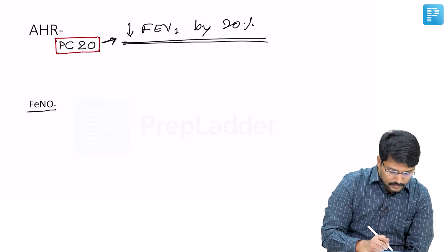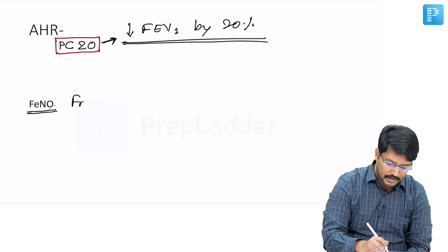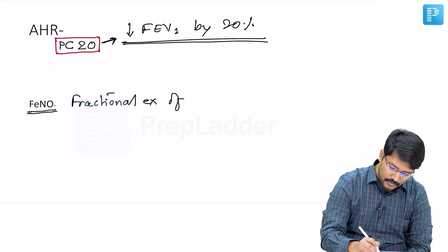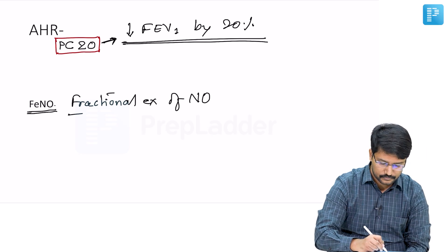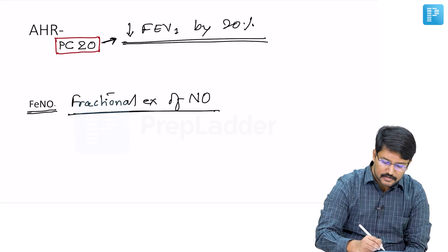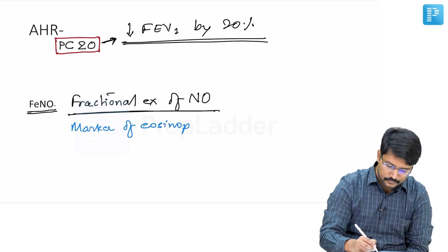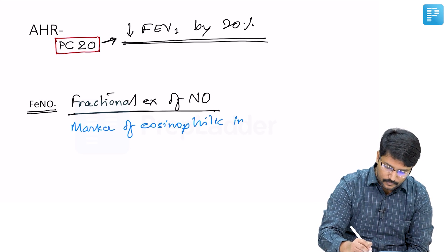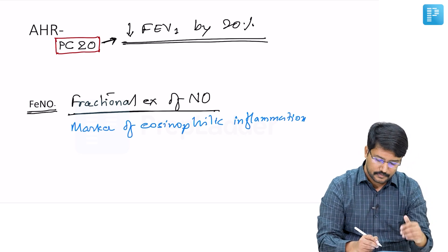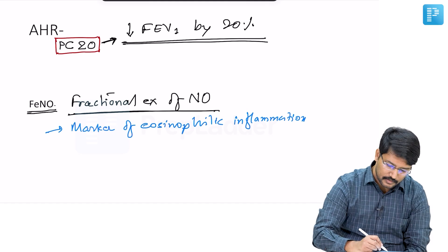Another not yet into practice but a significant investigation is fractional exhalation of nitric oxide. The nitric oxide can be considered as a marker of eosinophilic inflammation.